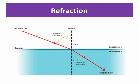Light also bends when it passes from water or glass back to air. This bending of a light ray when it passes from one transparent medium to another is called refraction.